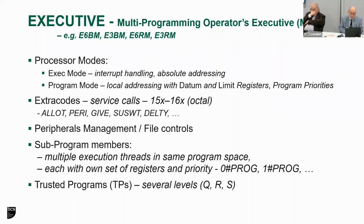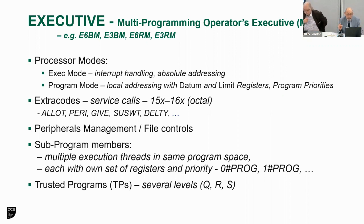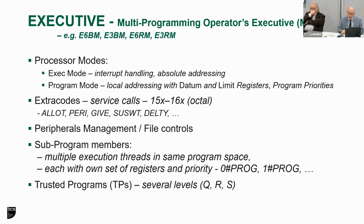The executive managed everything to do with peripherals and files. A very powerful — not very well advertised — facility was that EXEC would allow what were known as sub-programs: multiple execution threads within the same address space. So your one program space could have up to 30 different threads running in it at the same time, each with its own relative priority. These were known by a four-group name — zero hash, one hash, member zero, member one, and so on. And there was the concept of the trusted program — three levels: Q, R, and S — allowing you to do more and more things in collaboration with EXEC.